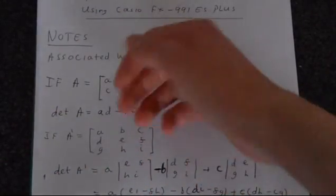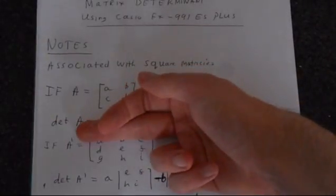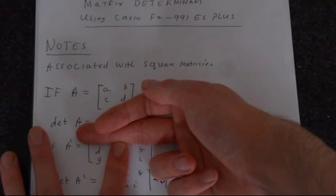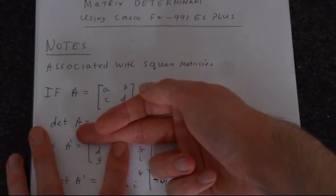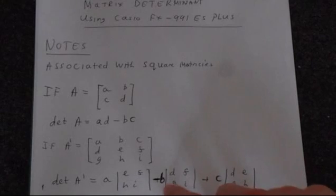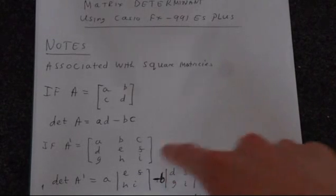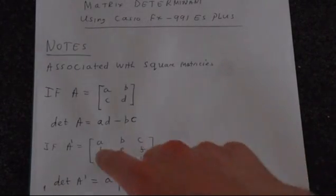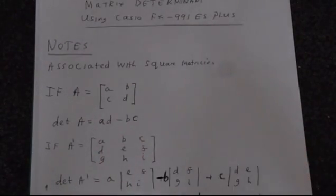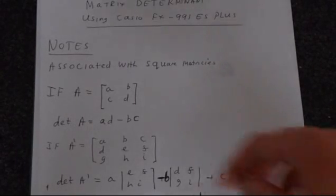And then you do the same thing for B, and you're subtracting that. So you've got minus B, and then the elements D, G, F, and I which are left. And you do exactly the same thing with C.